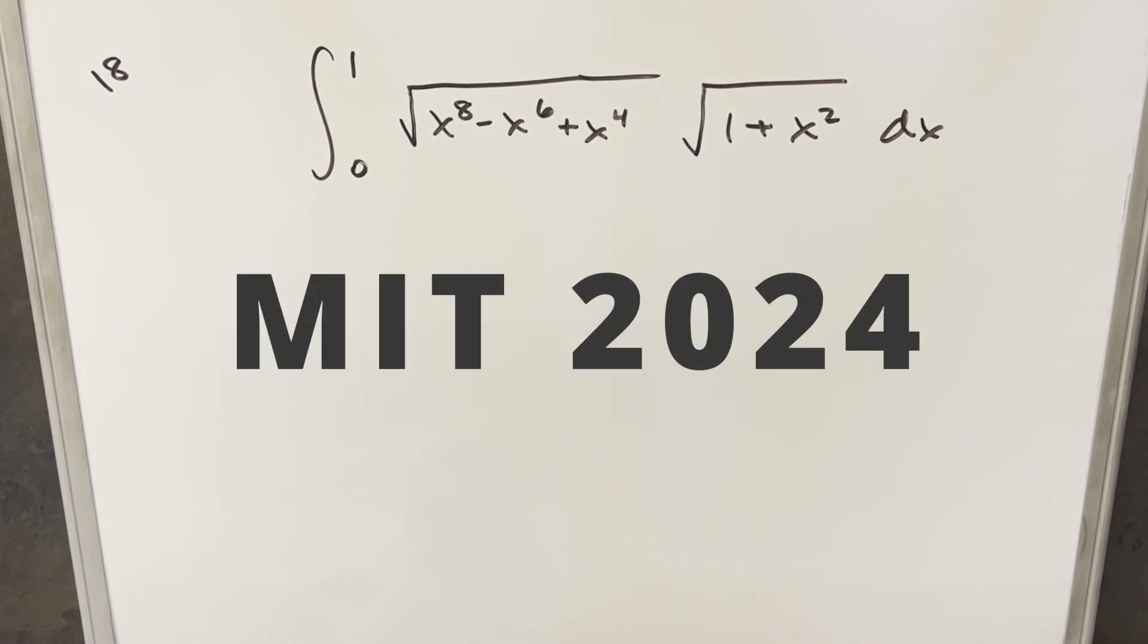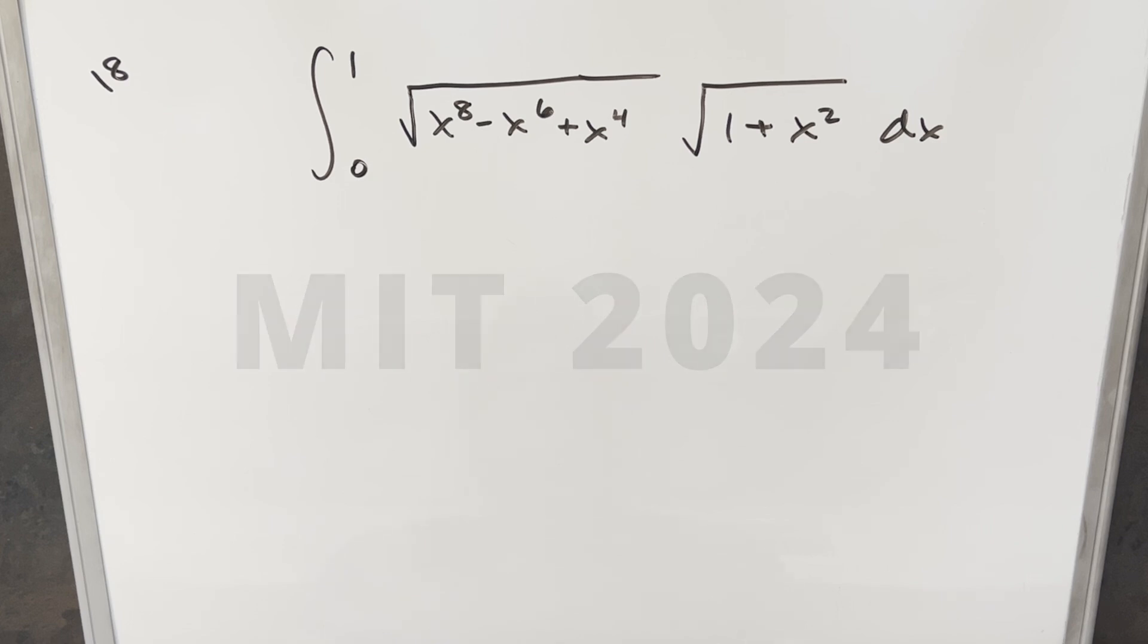Okay, we have to take another integral from the MIT integration B 2024, regular season, number 18. We have the integral from 0 to 1, square root of x to the 8th minus x to the 6th plus x to the 4th times square root of 1 plus x squared dx.